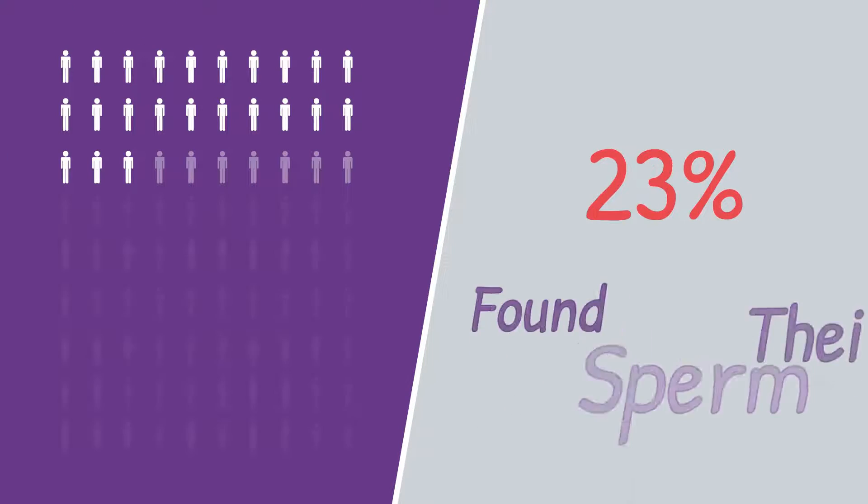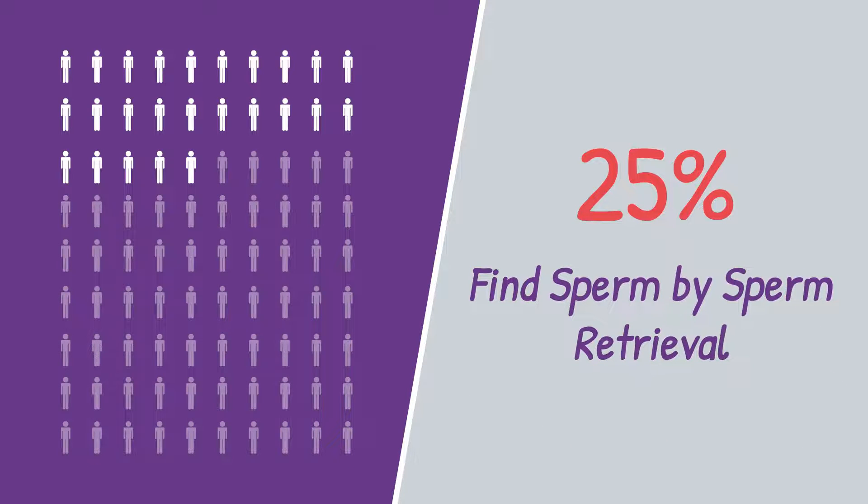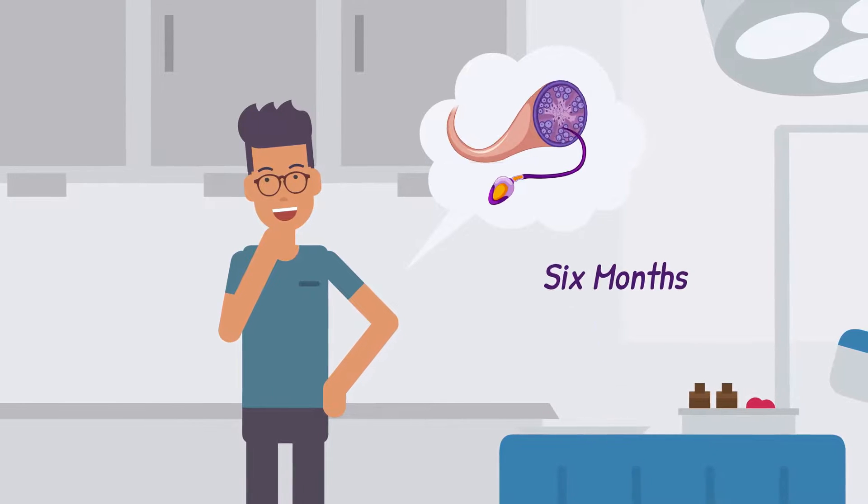23% of patients found sperm in their semen, and 25% of patients succeeded in finding sperm by sperm retrieval after Prolistem treatment. Our patent and unique formula can improve your chances to find sperm in semen after six months of treatment.